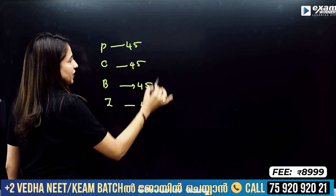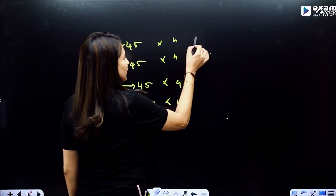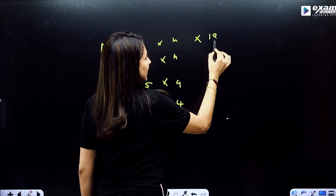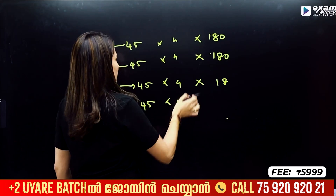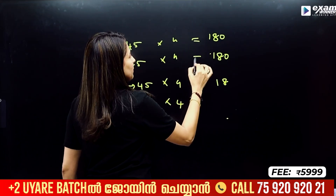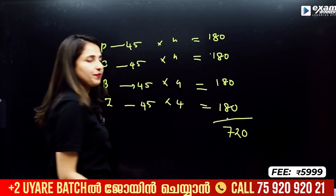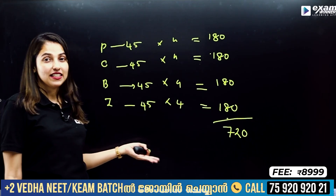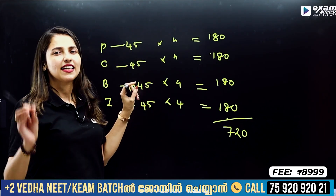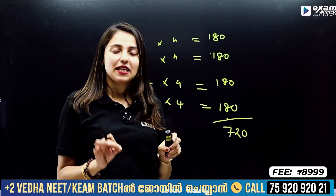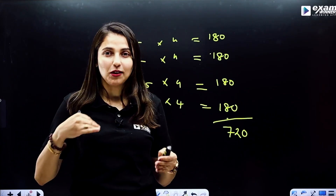One question has 4 marks. So if you have 45 questions, the total correct marks come to 180. You have 720 marks total. Now, the correct answer gives you marks, but if you mark a wrong answer, there is minus 1 mark. That's why you have to mark the correct answer.